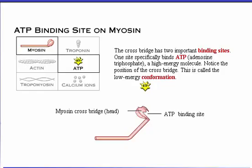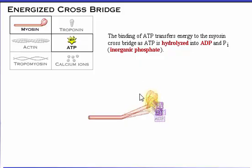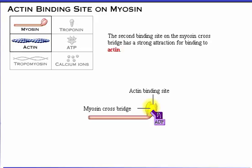Notice the position of the crossbridge — this is called the low energy conformation. The binding of ATP transfers energy to the myosin crossbridge as ATP is hydrolyzed into ADP and inorganic phosphate. Now the crossbridge is in its high energy conformation. The second binding site on the myosin crossbridge has a strong attraction for binding to actin, as we'll see later in the crossbridge cycling animation.